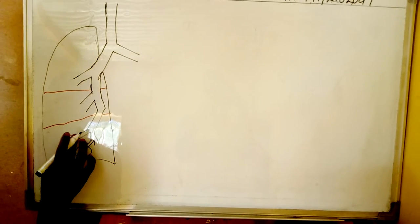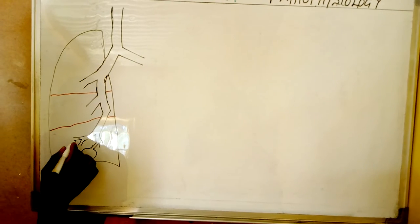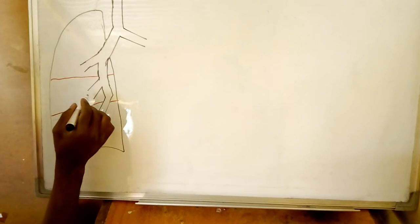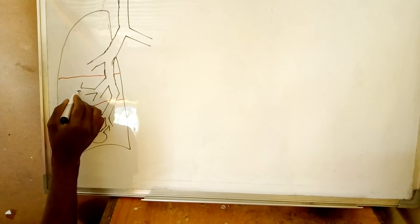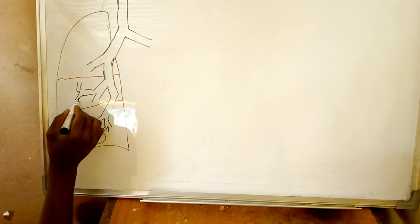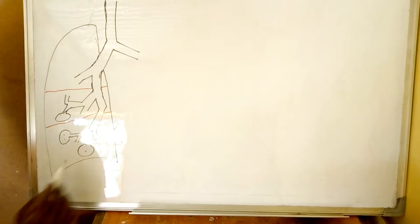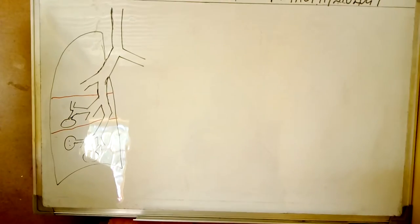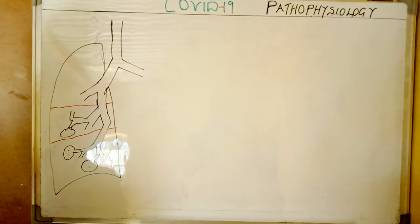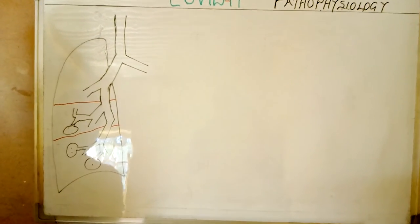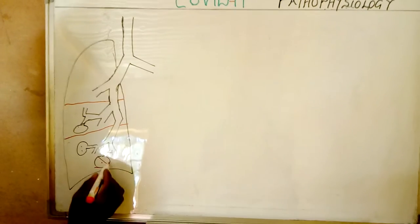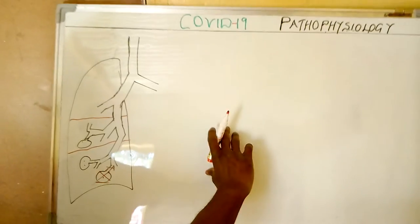When it's one, it is called an alveolus. When there are many, they are called alveoli. So these are the alveoli. We are saying that this coronavirus affects the cells that are found inside the alveoli. So let us try to bring the alveoli out here and see how this virus actually affects the alveoli.